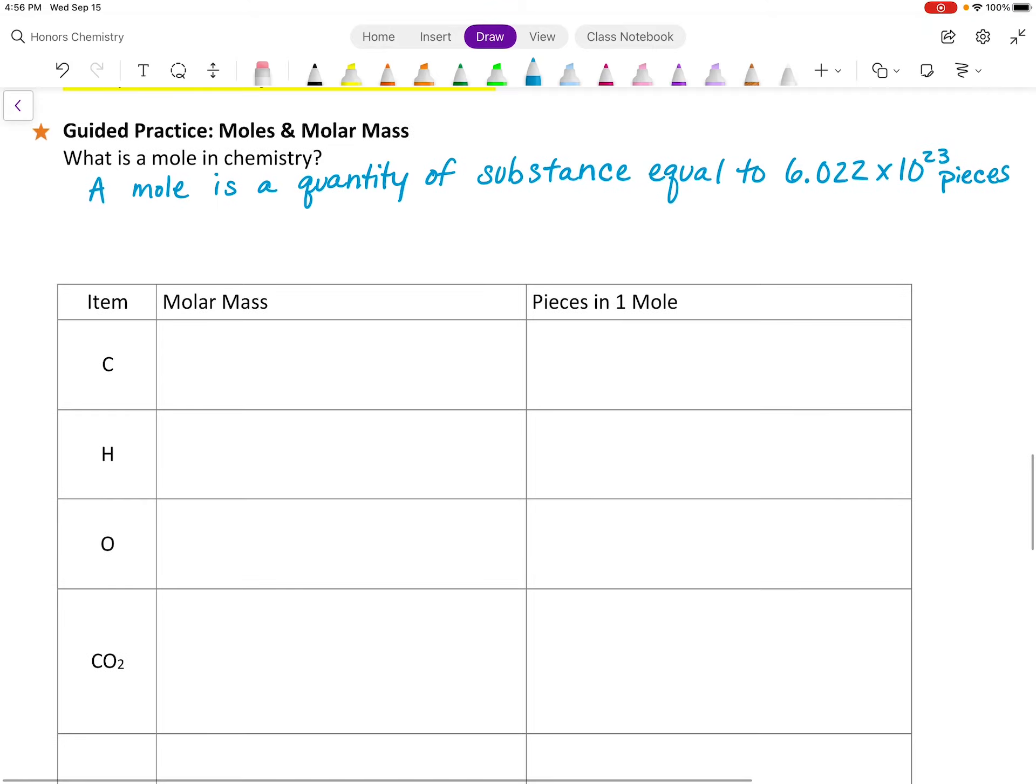And so we call that number Avogadro's number. You might be asking yourself what would these pieces be, and we will define each one of these pieces a little bit better as we go. But pieces could be one of really three things at this point. Just like a dozen, you can have a dozen eggs, but you could have a dozen friends or whatever. So this number is really just the number of pieces. But the pieces in chemistry that we use are going to be atoms for individual elements.